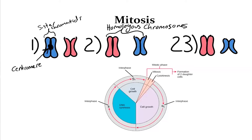After S phase, we get into G2 of interphase, where DNA is being repaired and more proteins are being made to prepare for mitosis to occur. After G2, we get into mitosis — a very quick process. Then we have cytokinesis, where the two cells split apart, and each of those cells can undergo the same process again. It is important to note where DNA replication happens and how many chromosomes we have before and after S phase.